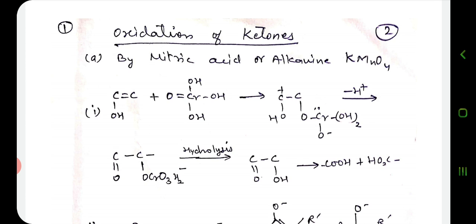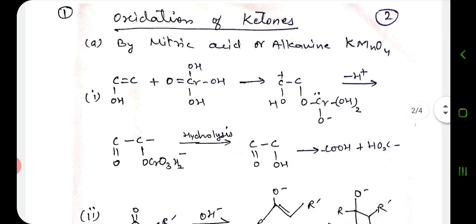First, nitric acid and alkaline permanganate are used, in which ketones are oxidized. If we keep an acidic medium with nitric acid, a strong acidic medium — or we say a strong oxidizing reagent — converts ketones into carboxylic acids. Enol or enolate ions are also formed, and we obtain the corresponding acid. From ketones we get carboxylic acids.